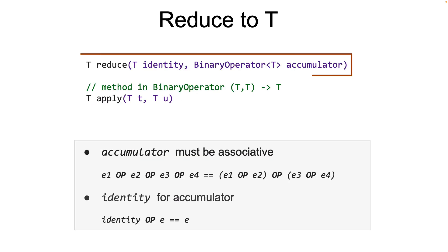Now the second form of the reduce method takes in an initial value, which is also called the identity. This serves as the default value when there are no elements in the stream. It's also important to remember that the identity passed to the reduce method is the initial value of R, the intermediate value, during the calculations. It's called the identity of the accumulator because when you apply the accumulator function on the identity and any element, the result must be equal to the element. That's the very definition of identity.